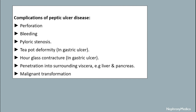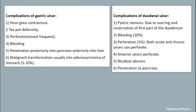Complications of peptic ulcer disease include perforation, bleeding, pyloric stenosis, tipped deformity, hourglass contracture, penetration into surrounding viscera, and malignant transformation. Complications of gastric ulcer specifically include hourglass contracture, tipped deformity, perforation, bleeding, penetration, and malignant transformation.